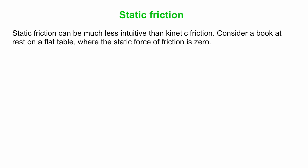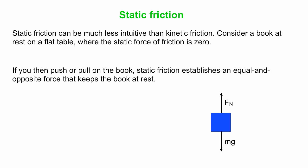Consider a book at rest on a flat table where the static friction force is zero. There's our free body diagram, again, normal force opposing the force of gravity. If you then push or pull on that book, static friction's job is to prevent motion. Its job is to keep the book at rest.